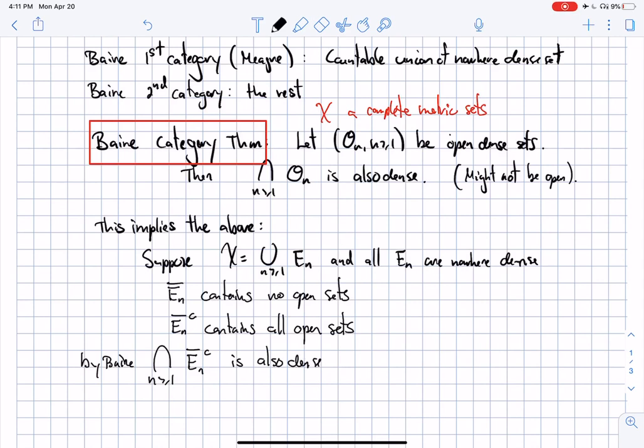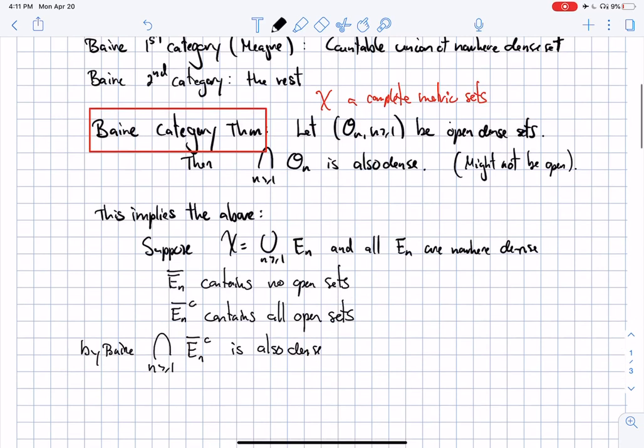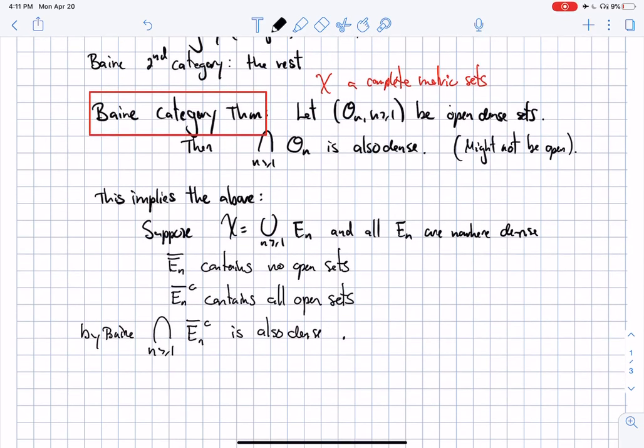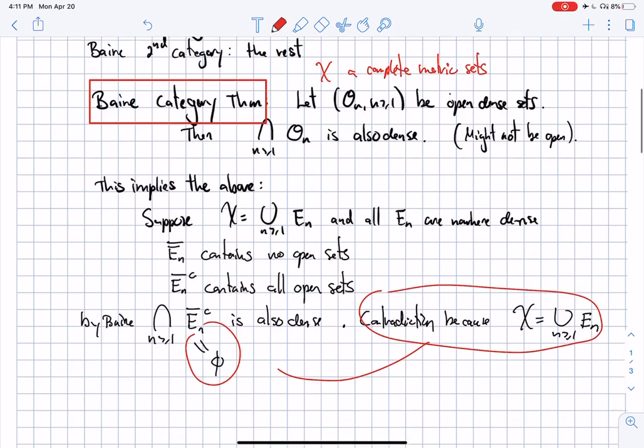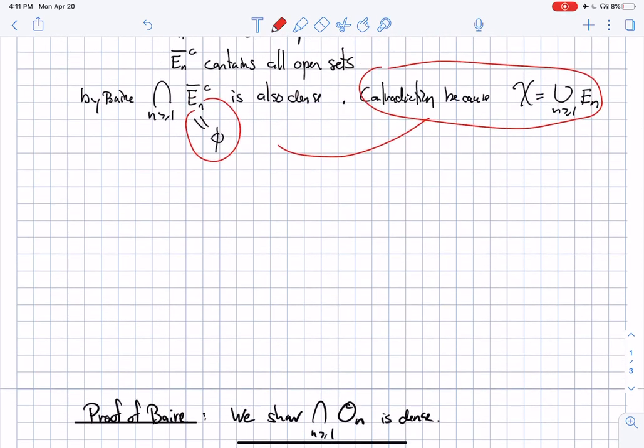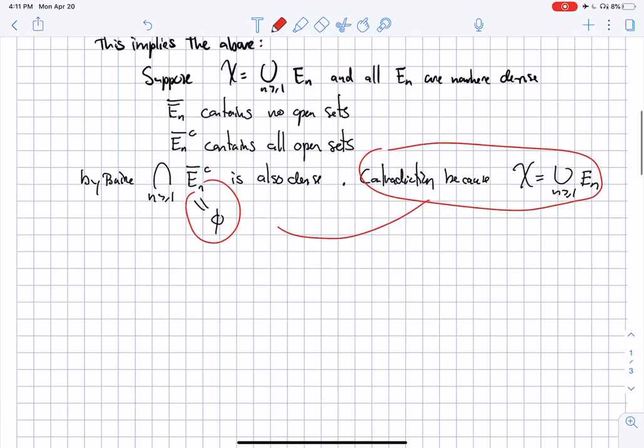Since this is the closure of EN, this is open, so we have an intersection of open dense sets, which should be also dense by the statement of the theorem. But this is actually a contradiction, because you started with X as the union of these guys, so that means this is actually empty. And the empty set is not dense. In fact, it's not trivial. So that's the statement of Baire's theorem. Now, how do you prove Baire? That's pretty easy if you know what you're doing.